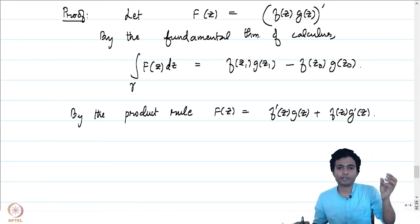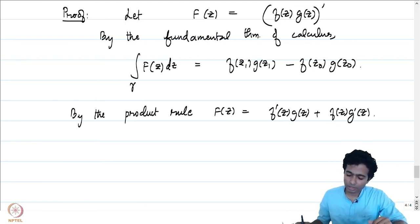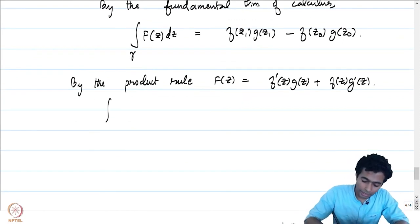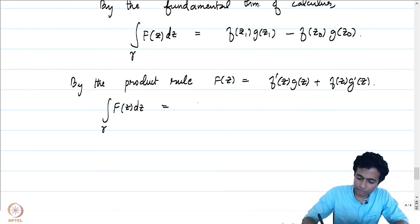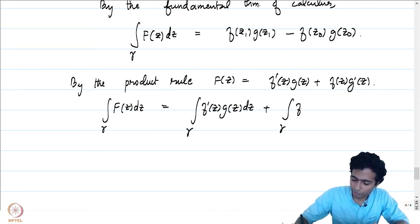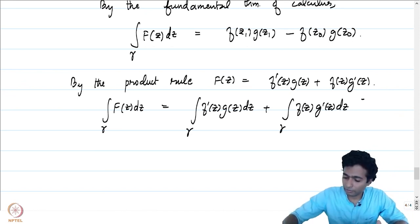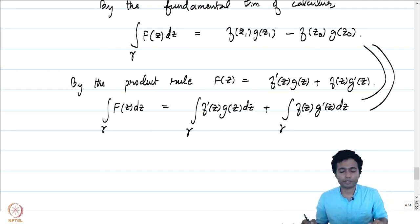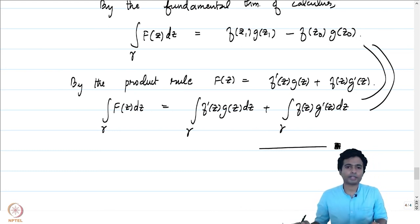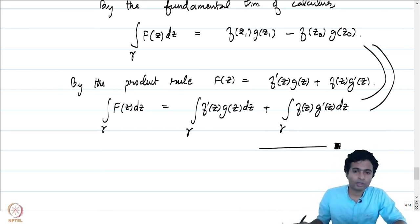The proof is a direct consequence of the fundamental theorem of calculus. Let capital F(z) = f(z)·g(z). By the fundamental theorem of calculus, ∫_{gamma} F'(z) dz = F(z_1) - F(z_0) = f(z_1)g(z_1) - f(z_0)g(z_0). By the product rule, F'(z) = f'(z)g(z) + f(z)g'(z). Using linearity of the integral, we split: ∫_{gamma} F' dz = ∫_{gamma} f'(z)g(z) dz + ∫_{gamma} f(z)g'(z) dz, which is precisely what we set out to prove. This gives a straightforward proof of integration by parts.